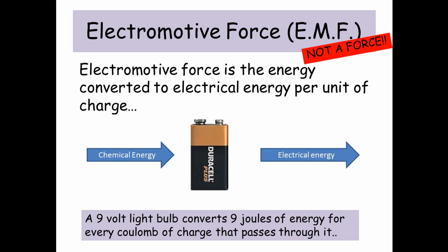So for example, this battery is taking chemical energy and changing it into electrical energy. So across the terminals of the battery would be an EMF. The voltage across the battery would be an EMF. For example, a 9 volt battery converts 9 joules of energy for every coulomb of charge that passes through it.